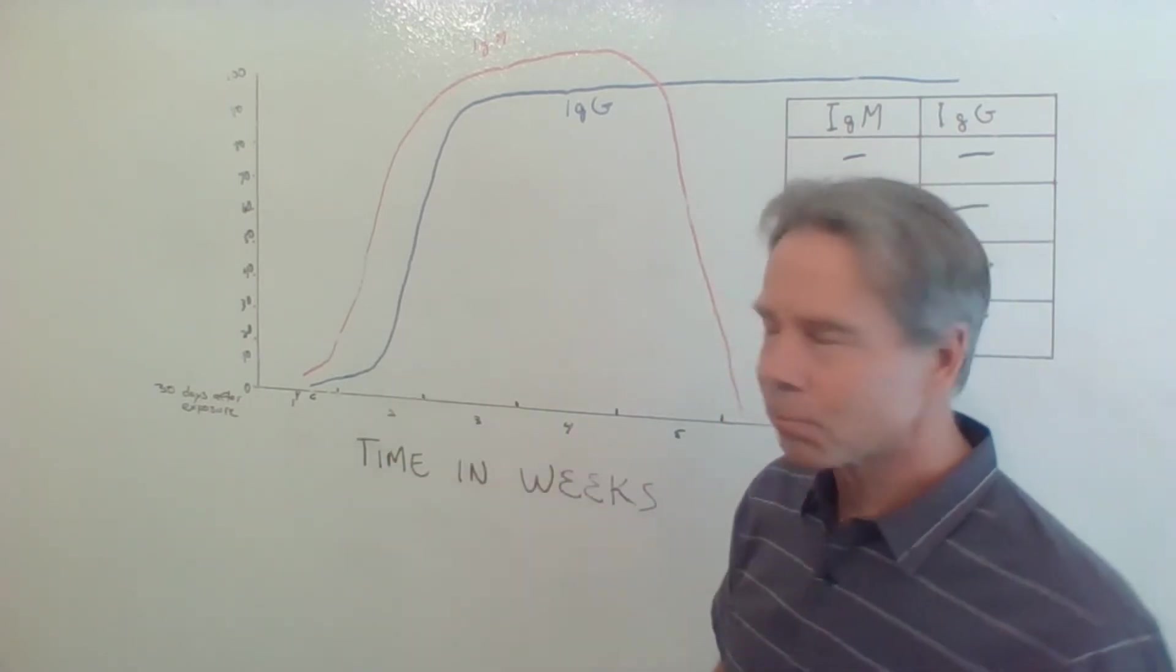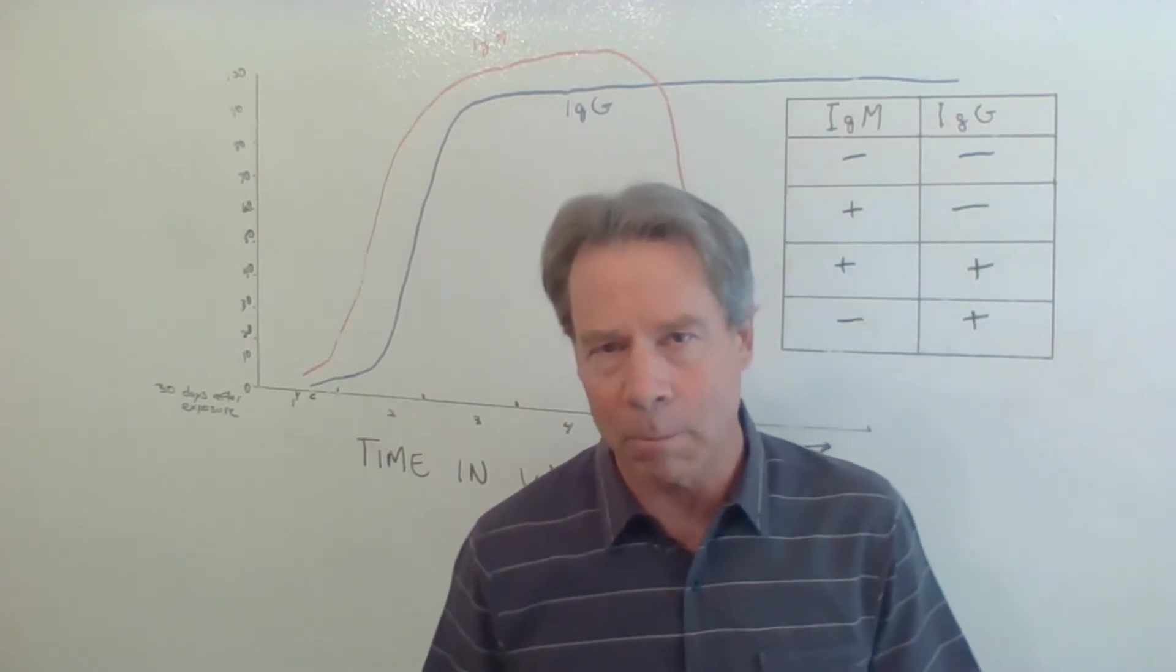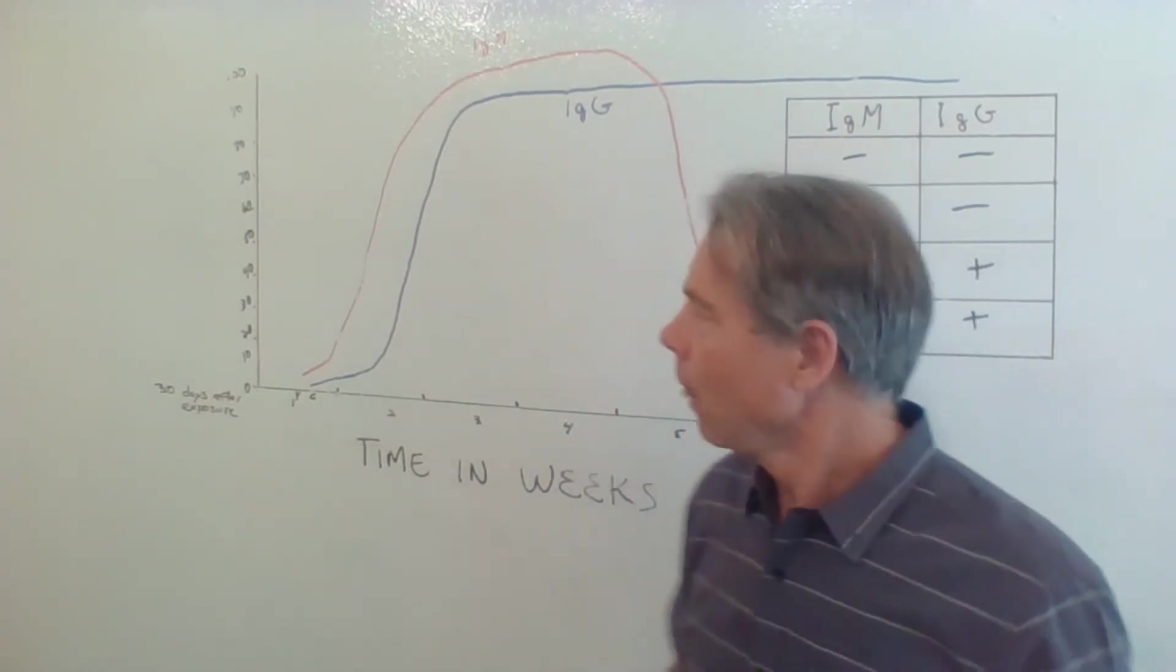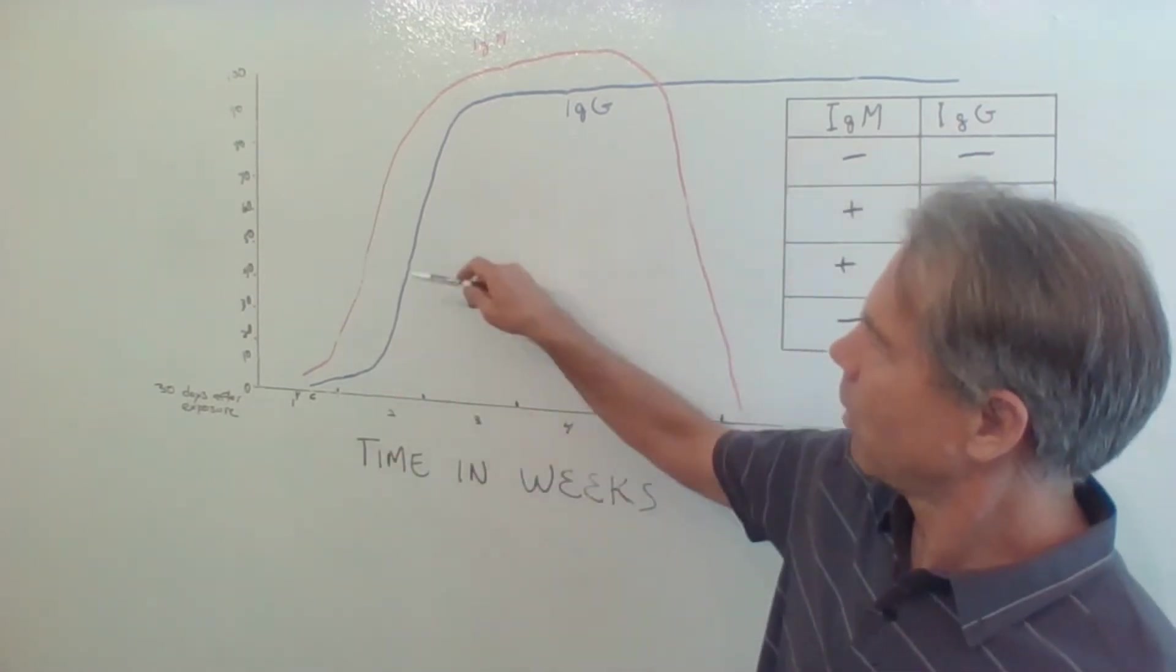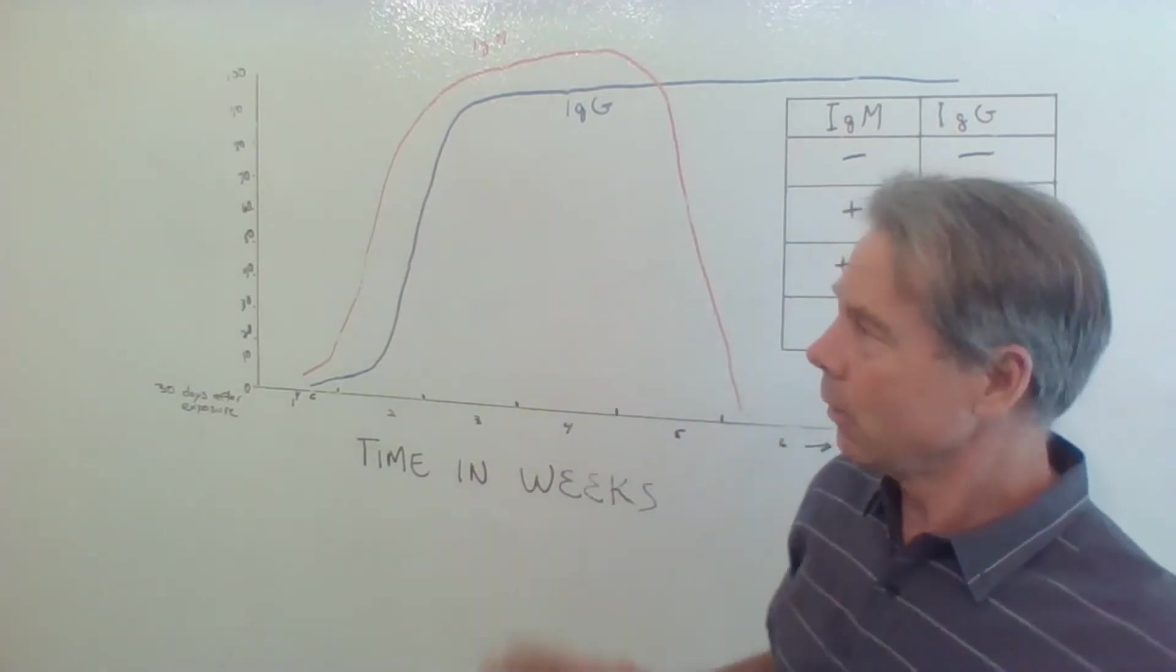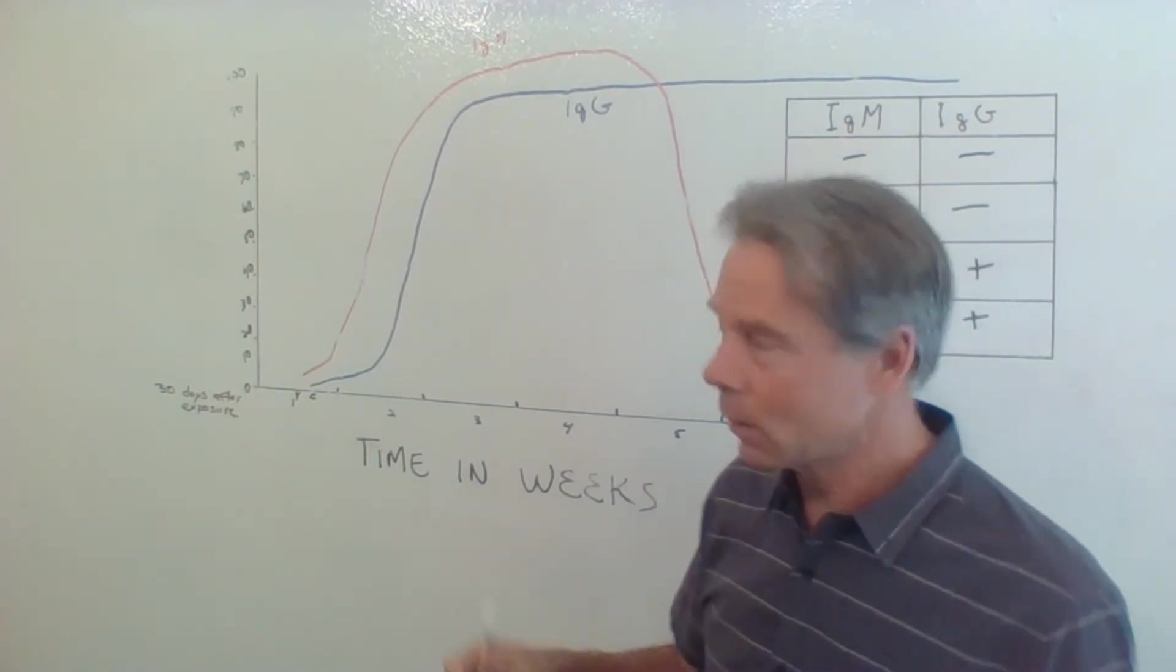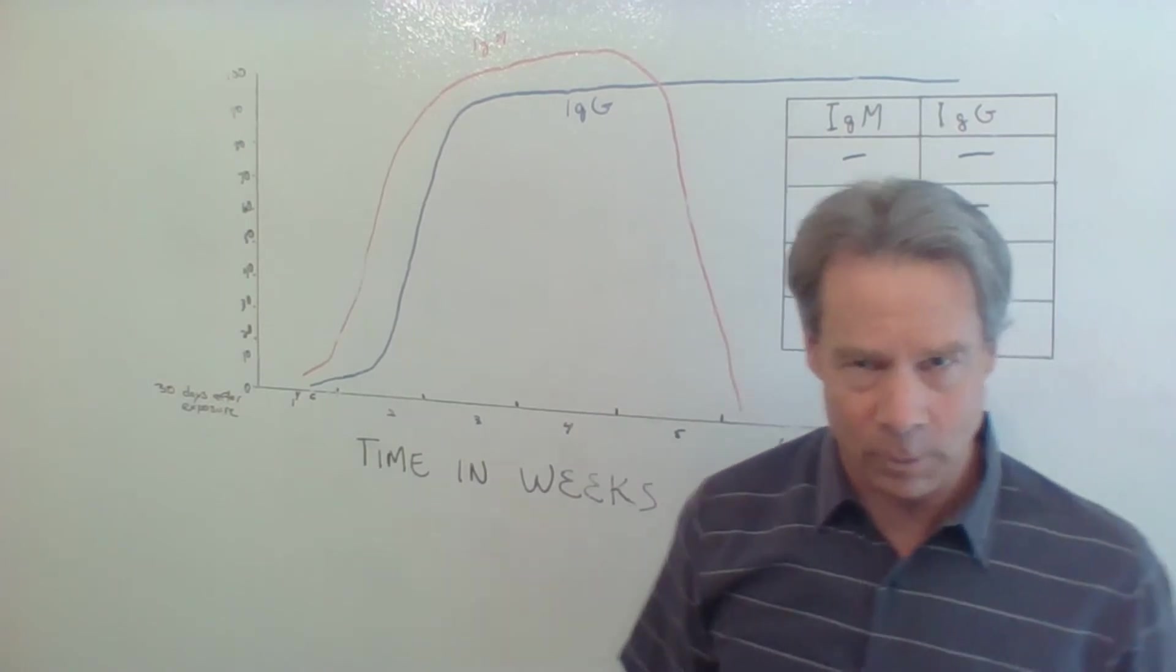Now the IgG molecule, this is a bigger molecule so it takes longer to build in the body. So it's a little slower on getting to the scene. But this one here begins at about six to eight days and it begins to rise. And you'll get notable blood levels of both of these during this parallel time between somewhere between a week and two and a half weeks. And then they both peak almost about the same time at about three weeks.